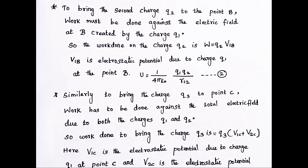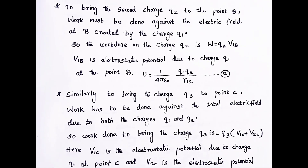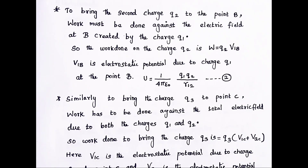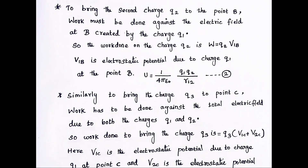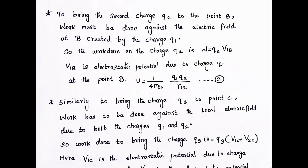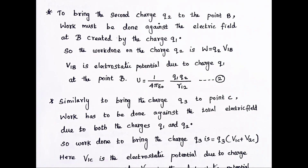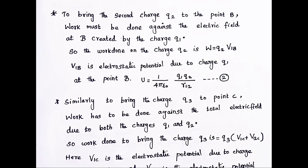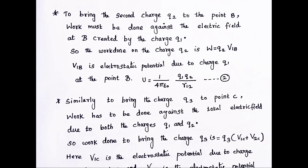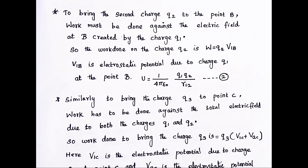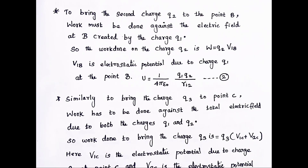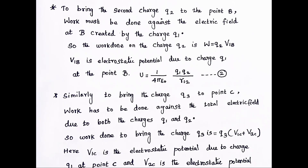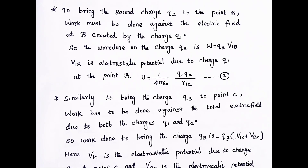The work done on charge Q2 is W = Q2 × V1B, where V1B is the electrostatic potential due to charge Q1 at point B. So U = (1/4πε₀)(Q1·Q2/R12). This is our potential energy formula for the first two charges.